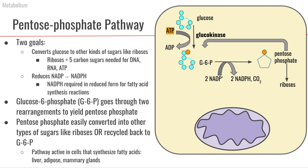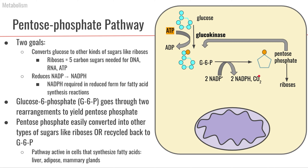Now let's look at what the pentose phosphate pathway actually is. We start with glucose-6-phosphate, which then goes through two rearrangements to become pentose phosphate — a five-carbon sugar that still has a phosphate group. In the process of those two rearrangements, two NADPs are reduced to two NADPHs, and a carbon dioxide is lost along the way.